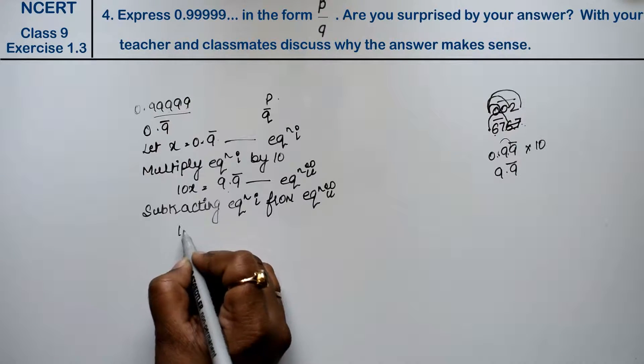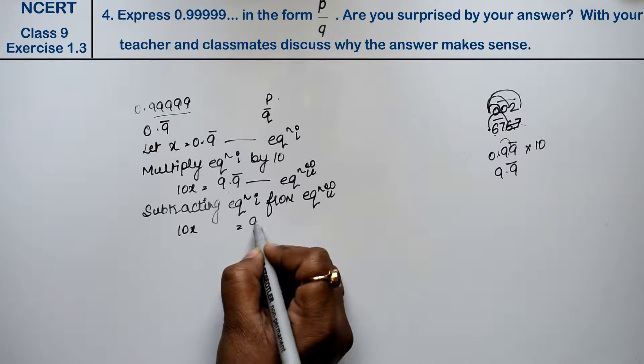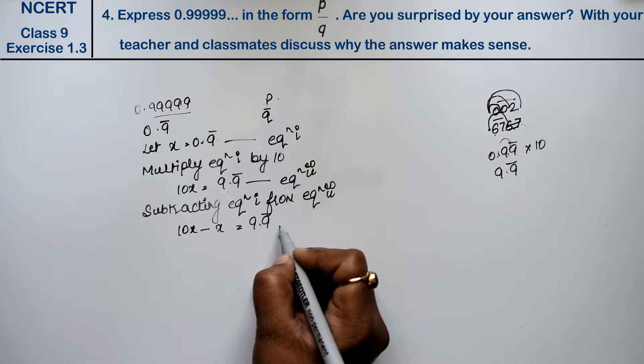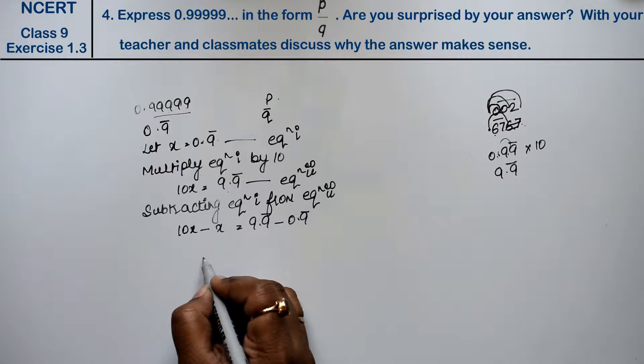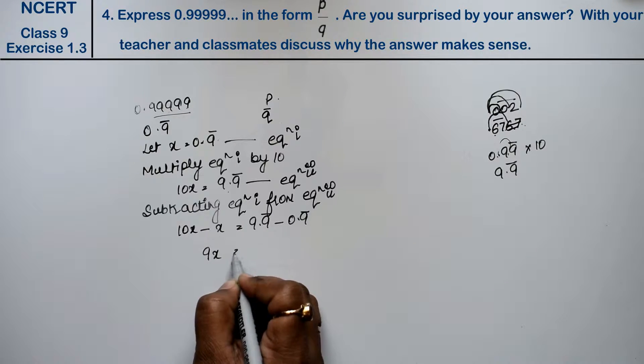Now you see, from 10x minus x, we have 9x. 9x equals to, so this is 9.9 bar minus 0.9 bar, which gives 9.